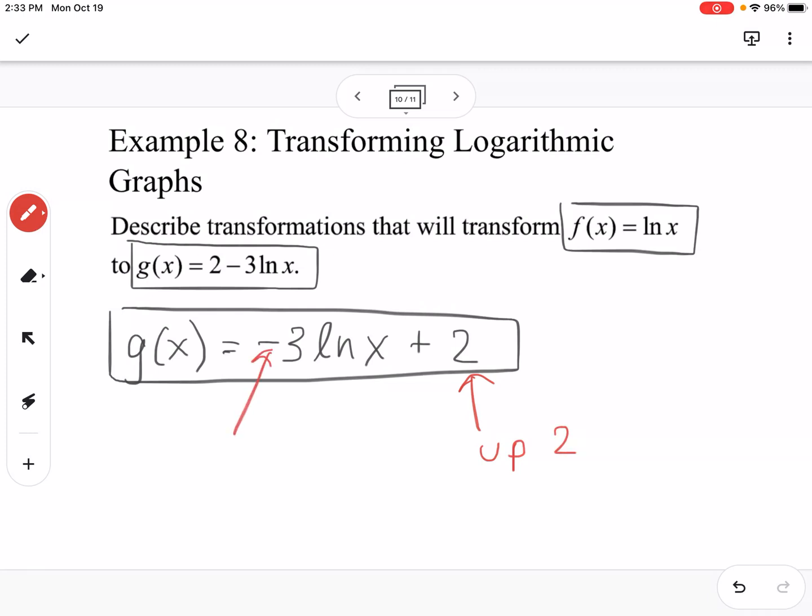That plus 2 shows you that it's going to be a shift up 2. The negative out front tells us it's going to reflect over the x axis. And the 3 tells us we're going to have a vertical stretch by a factor of 3. Same transformation format of all the functions that we've done before and same characteristics for each of those.